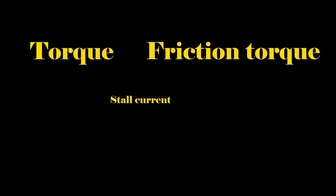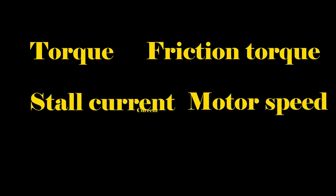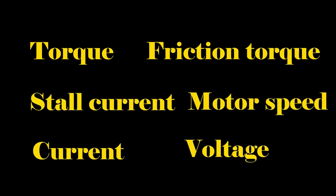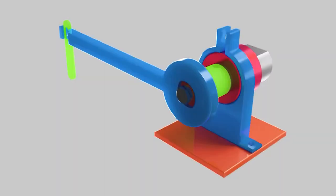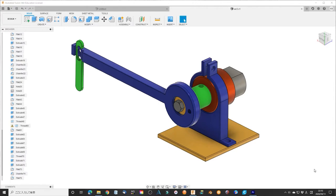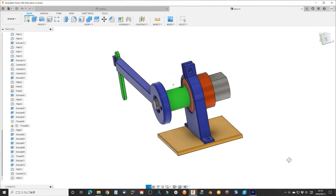Now, the concepts of torque, friction torque, stall current, motor speed, current and voltage and their relationship have been explained. We can do experiments to measure these values and investigate the characteristics of a DC motor. First, we will make a simple friction torque meter to measure the performance of a mini-DC motor. Use Fusion 360 to make all these parts.